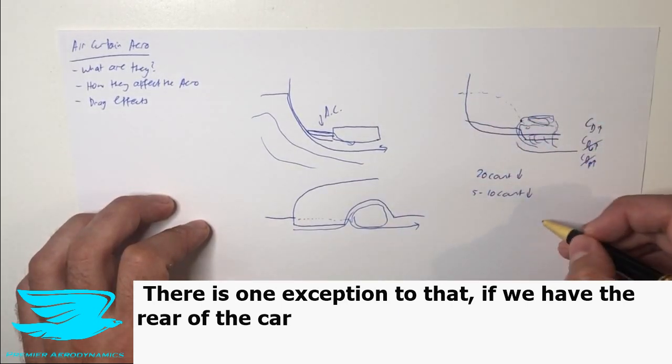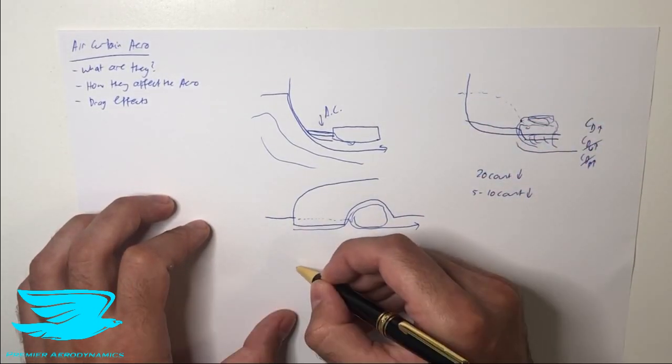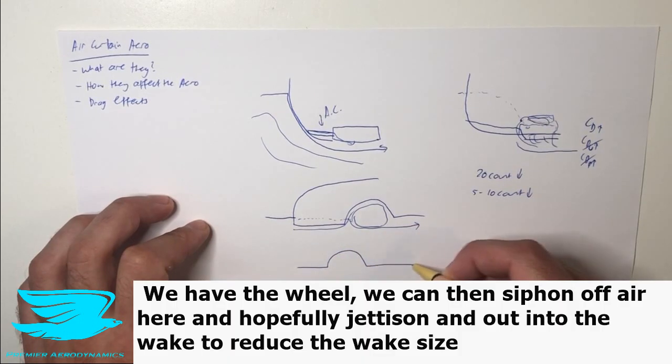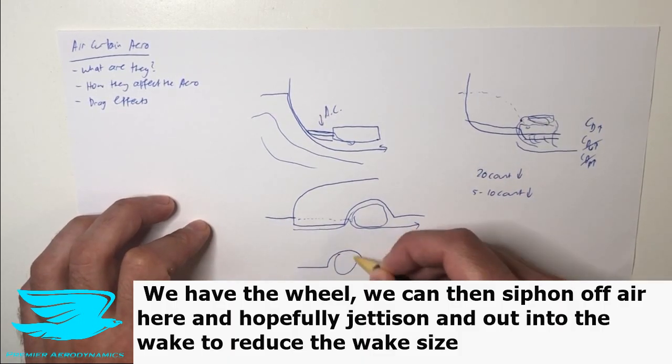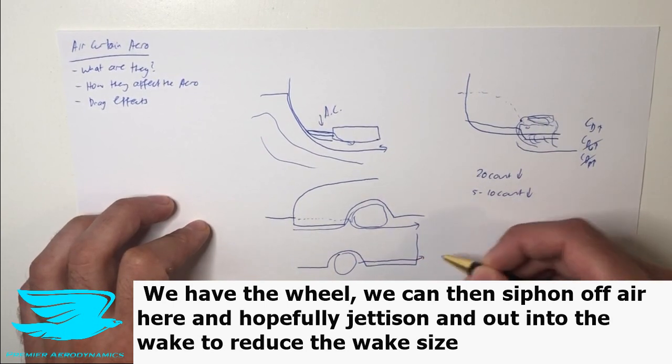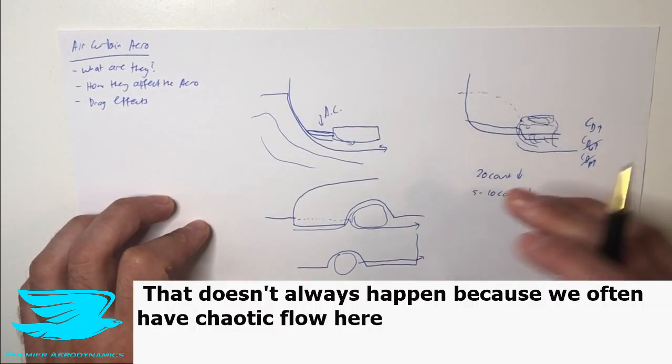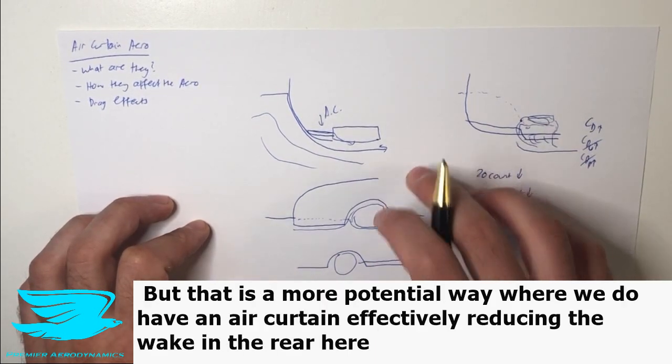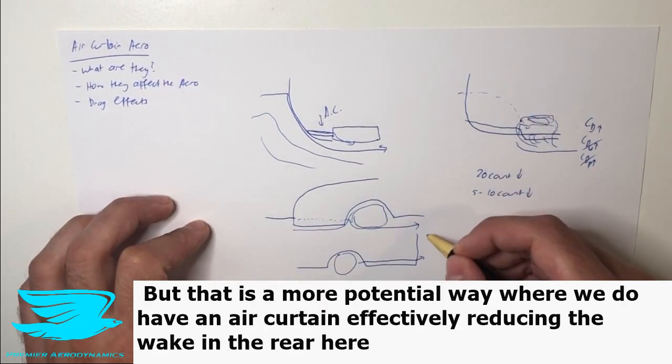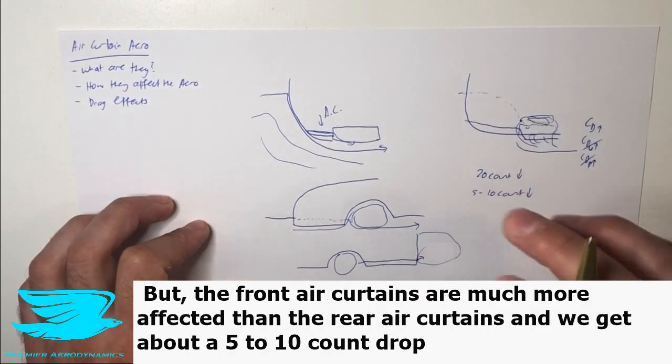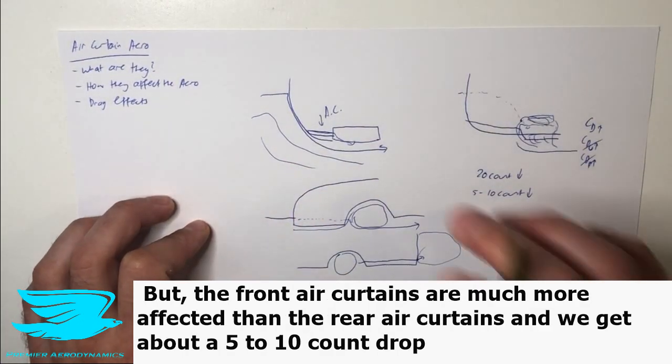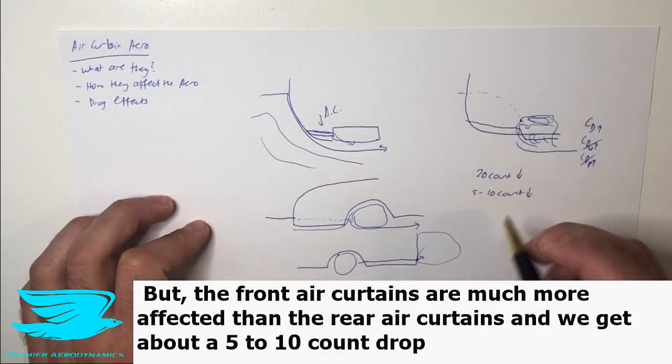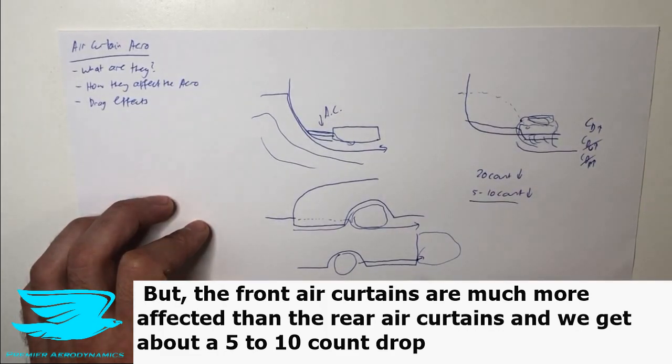There is one exception to that, where if we have the rear of the car down here, we can then siphon off air here and hopefully jettison it out into the wake to reduce the wake size. That doesn't always happen because we often have chaotic flow here, but that is one potential way where we do have an air curtain effectively reducing the wake in the rear. But generally speaking, the front air curtains are much more effective than the rear air curtains, and we get about a 5 to 10 count drop by using them.